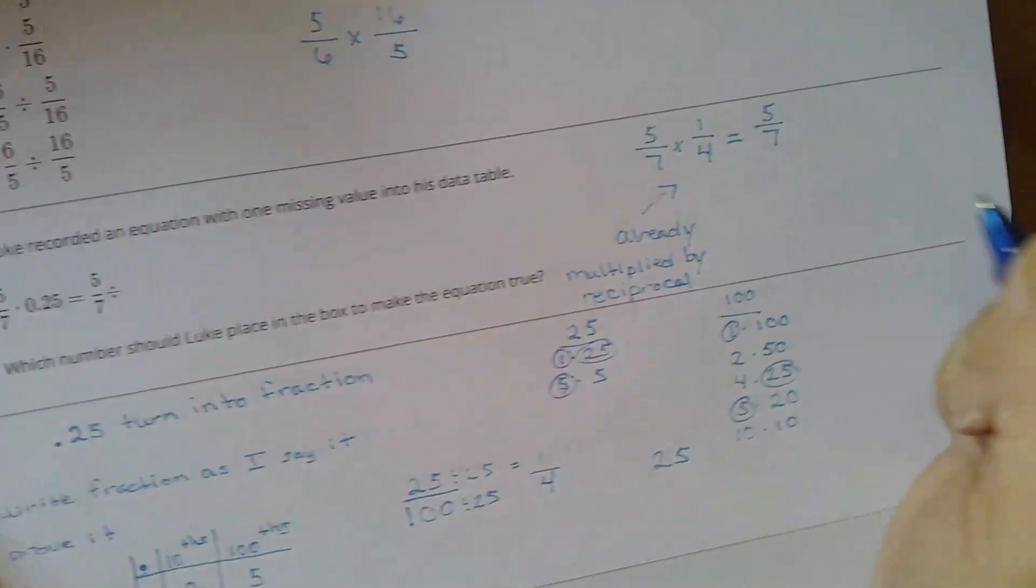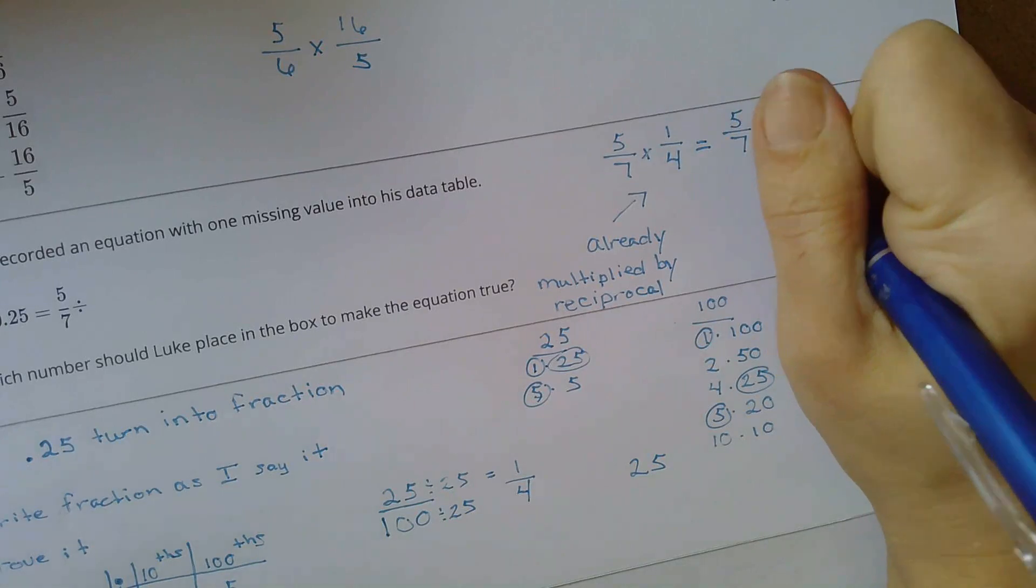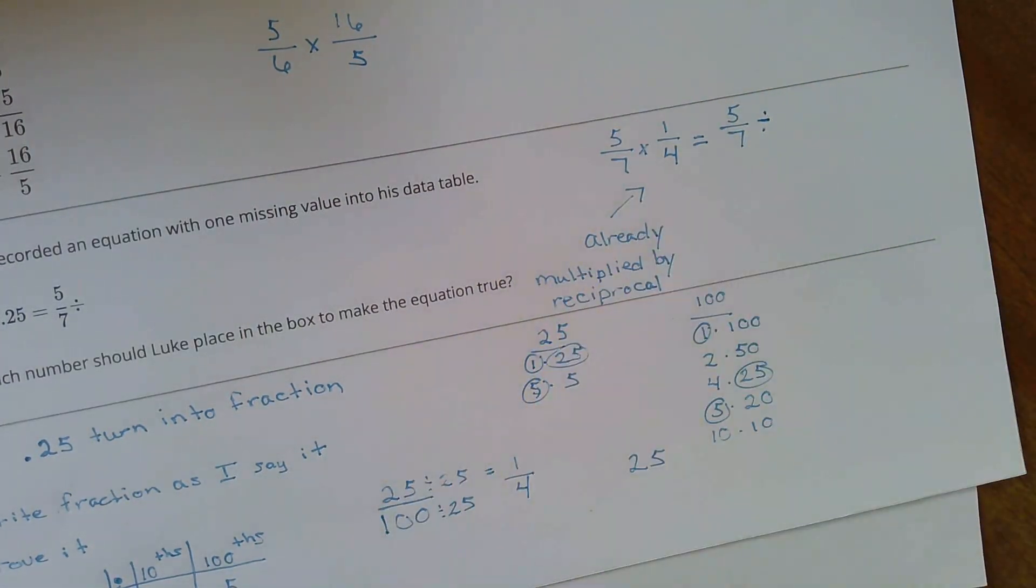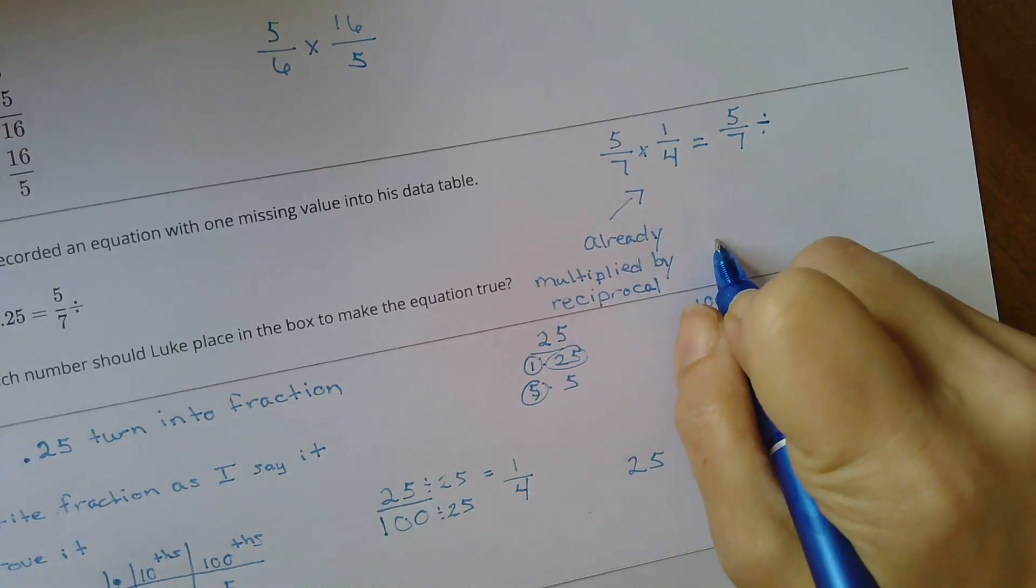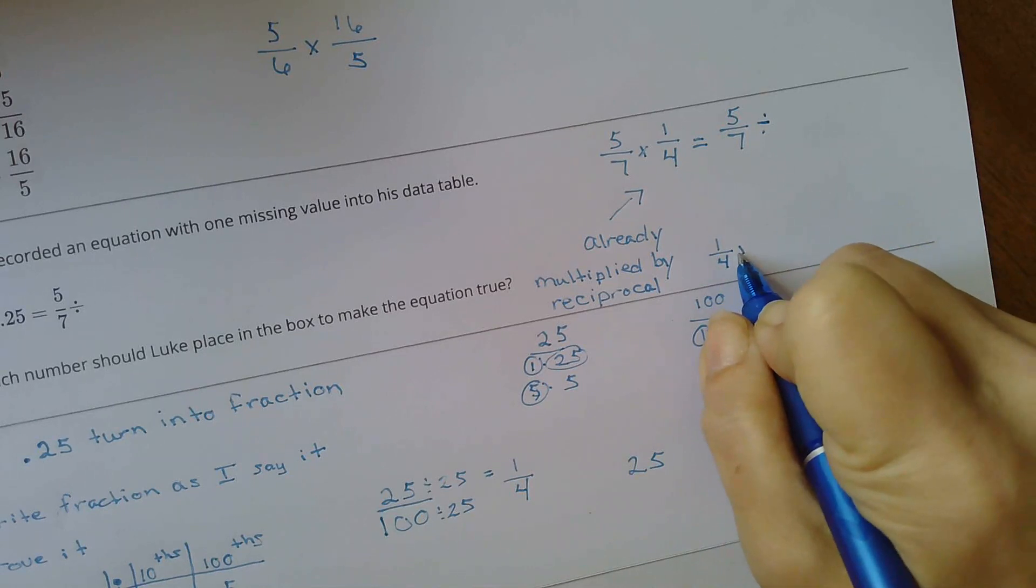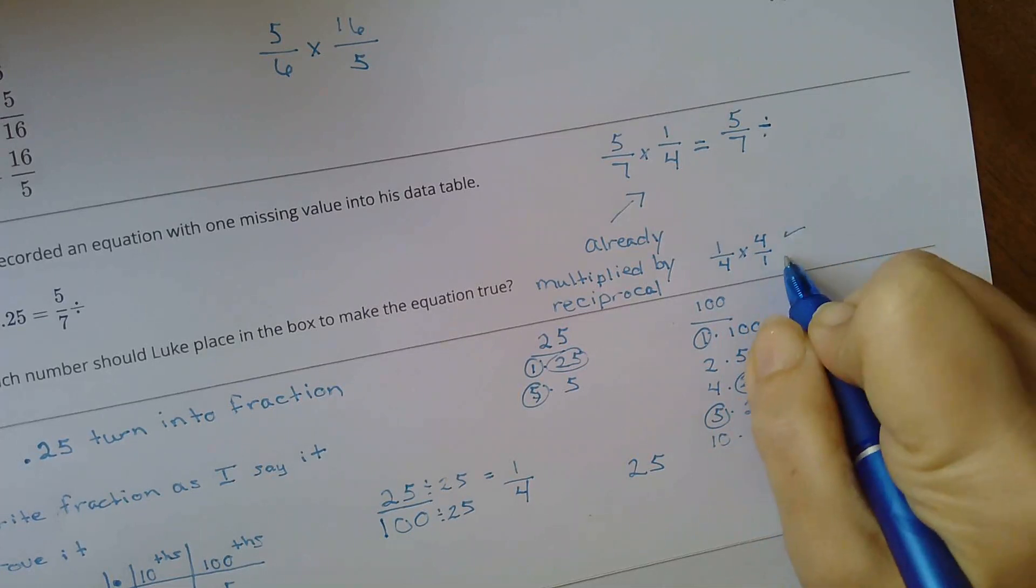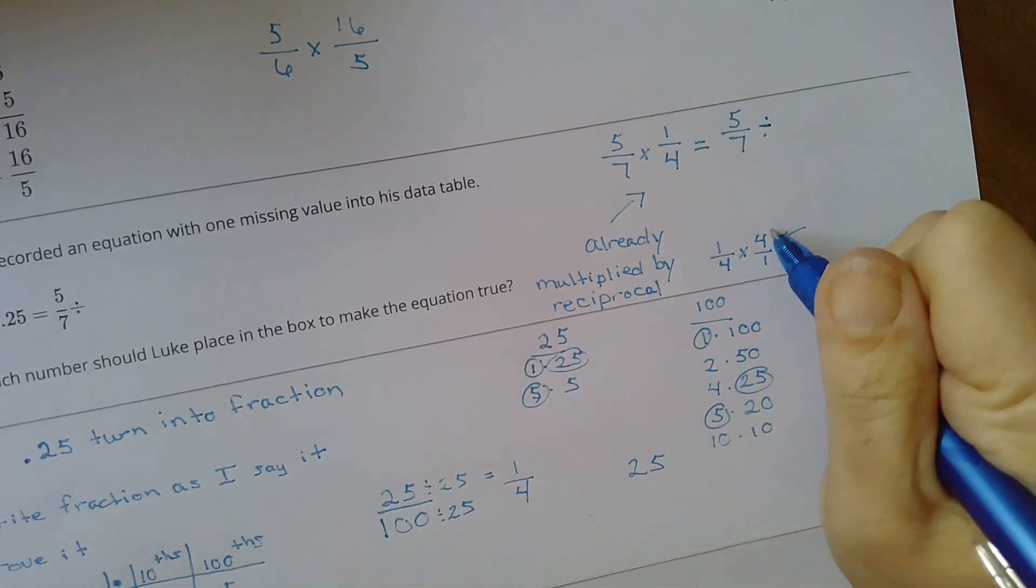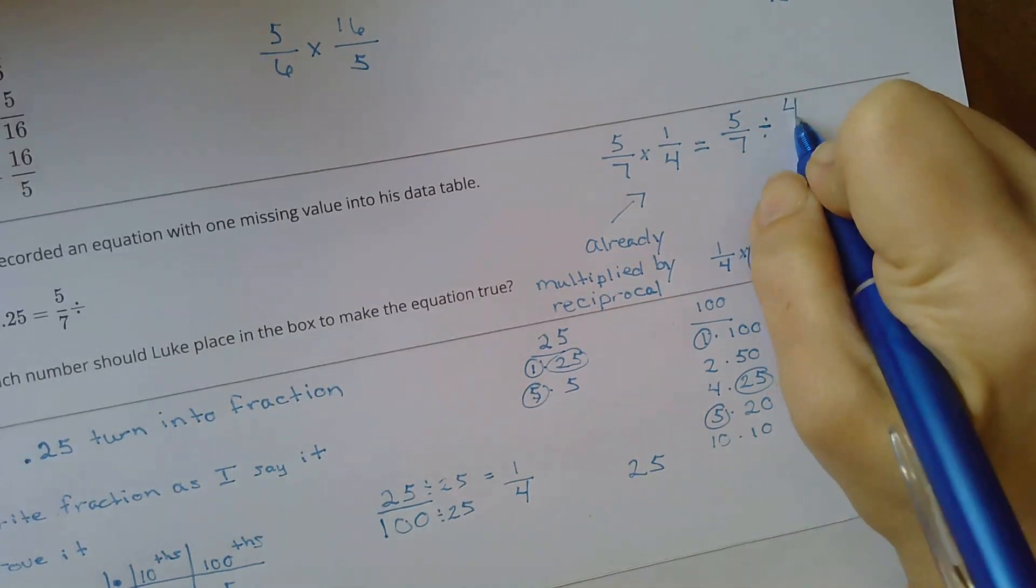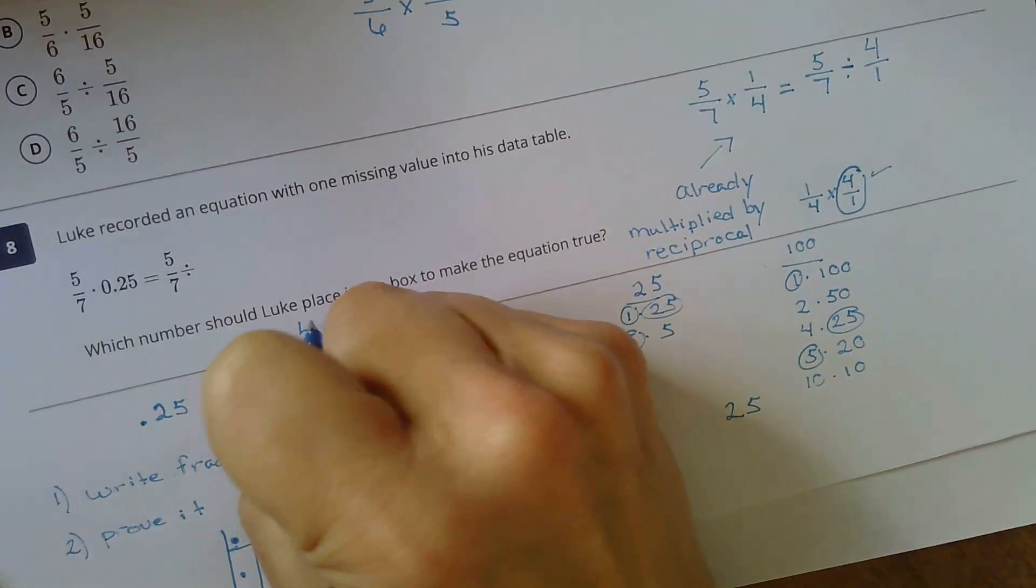So then that means what do I need to do here? I need to find out what it was before I multiplied by the reciprocal. The reciprocal, sure enough, that would get me 1. So it started with 4 over 1, and really that is just 4. So he should have used a 4 to make the equation true.